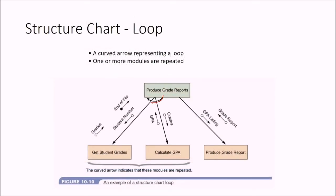A loop is represented by a curved arrow. One or more modules may be repeated. For example, to produce grade reports, the modules 'get student grades' and 'calculate GPA' are covered by the curved arrow, indicating that these two modules will be repeated or iterated again and again.